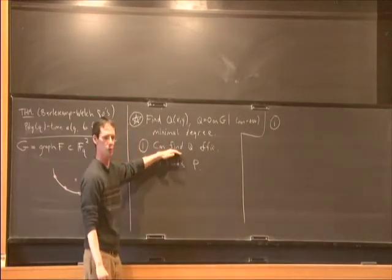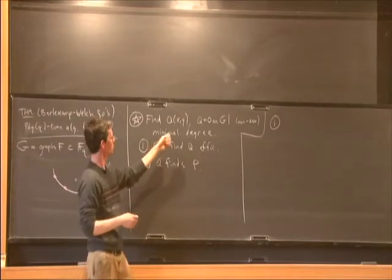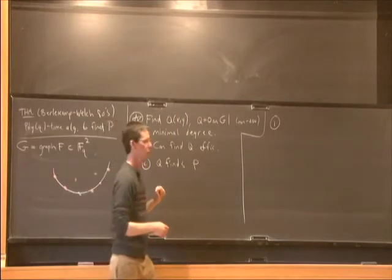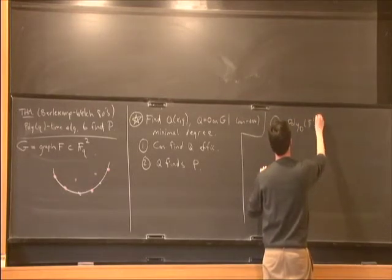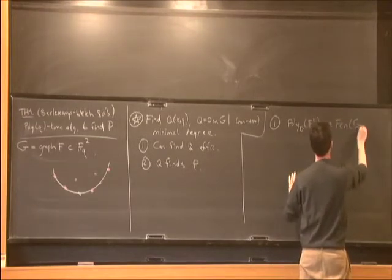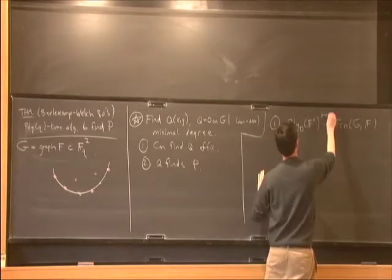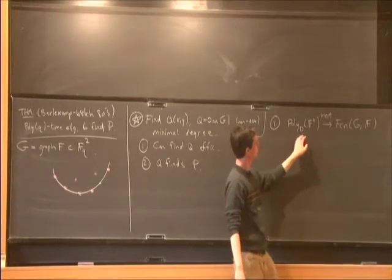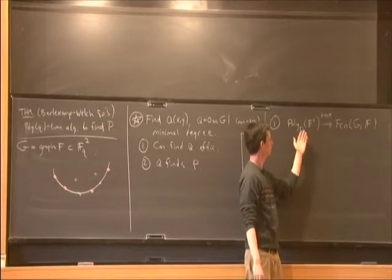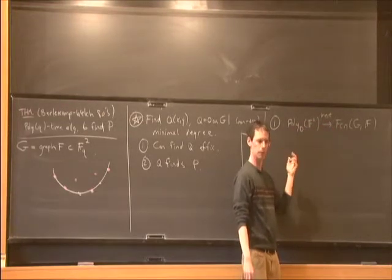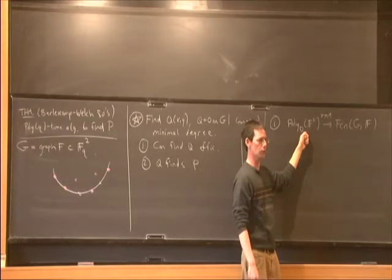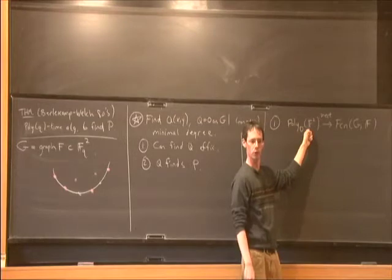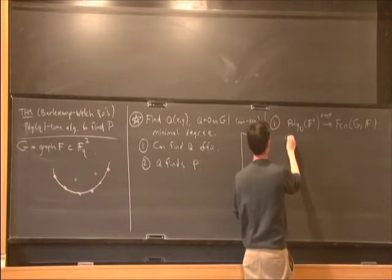To find Q efficiently: suppose I want to know whether there's a degree d polynomial meeting these conditions. I consider the map that restricts polynomials to the graph G. This is a linear map between vector spaces, and I want to know whether it has a non-trivial kernel. All basic things in linear algebra can be done with an efficient algorithm — there's an efficient algorithm to check whether this linear map has a non-trivial kernel, and if it does, an efficient algorithm to find some element in that kernel. That finds Q.